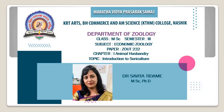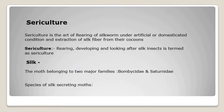Sericulture is the rearing, developing, and looking after of the silk insect. Whatever is required for the good development of the silkworm is taken care of in sericulture, facilitating them to spin a good quality cocoon. Sericulture is the art of rearing silkworms under artificial conditions, providing suitable conditions so they can spin a good quality cocoon. Good artificial conditions and good quality food are given so we can get very good quality silk fiber from those cocoons.